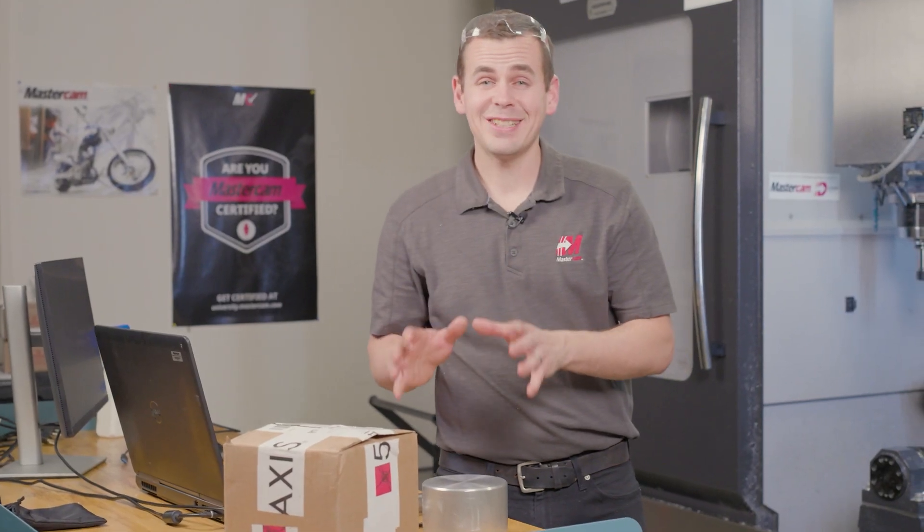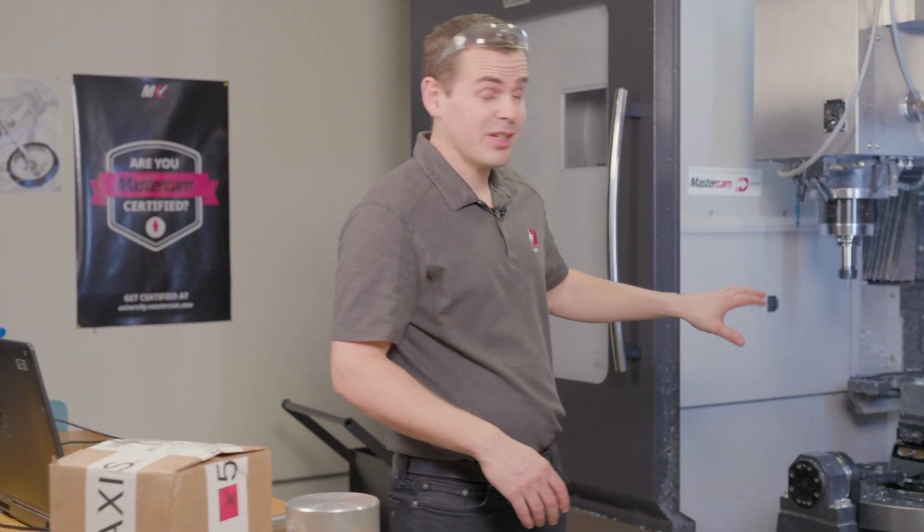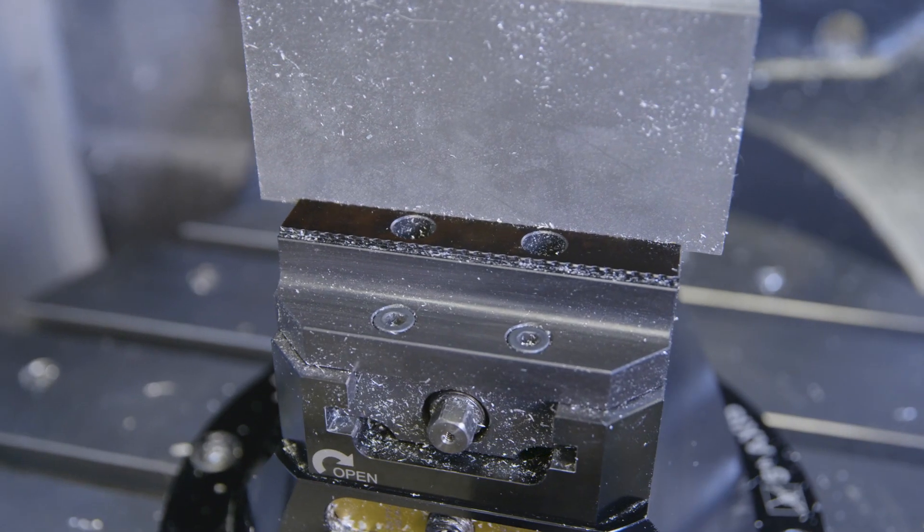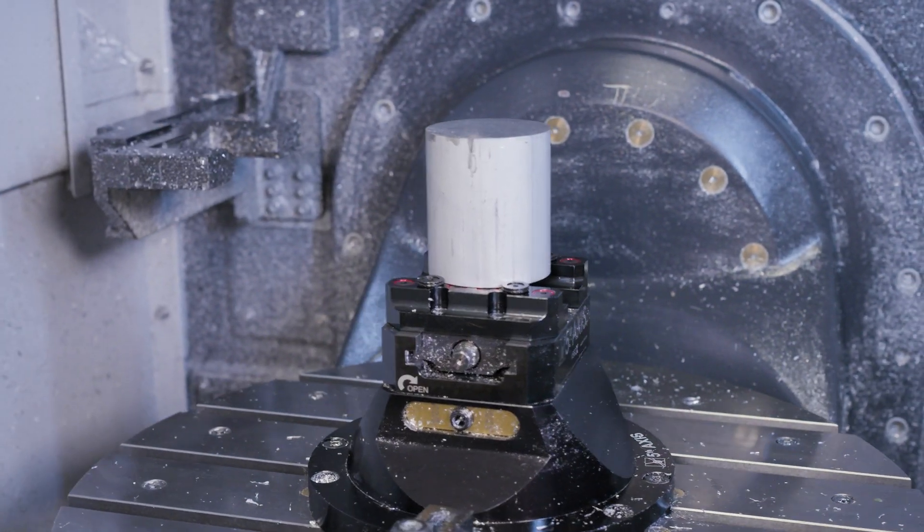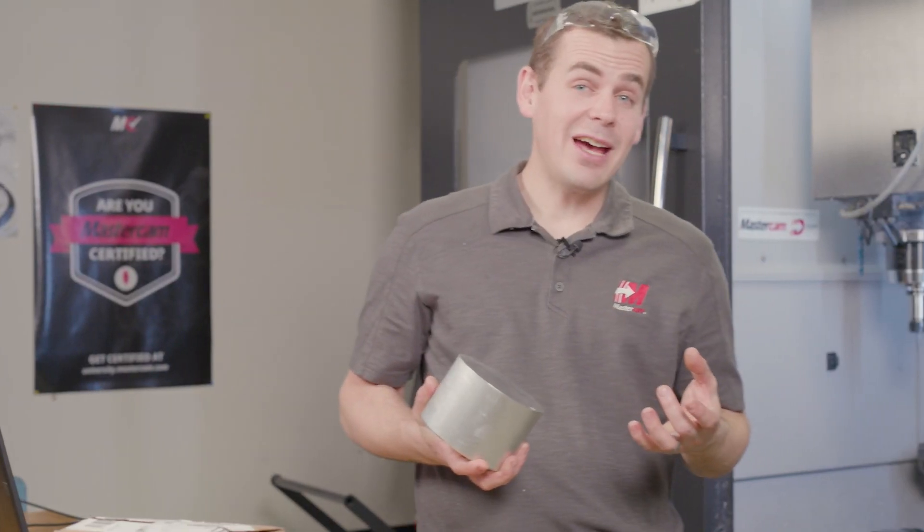Now what this is going to do is take our V-Series self-centering vise and convert it so that we can now grip onto round stock. These new jaws will take anything from an inch and a half diameter up to eight inches in diameter.